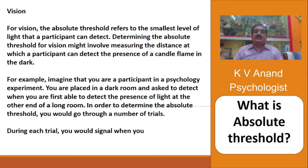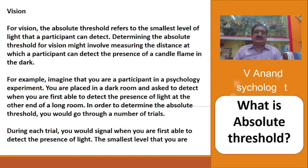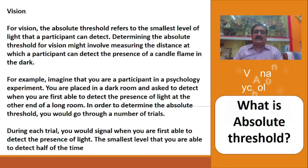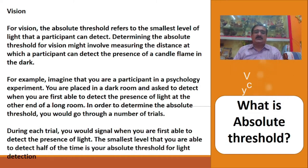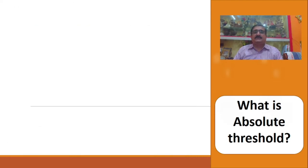In order to determine the absolute threshold, you would go through a number of trials. During each trial, you would signal when you are first able to detect the presence of light. The smallest level that you are able to detect half of the time is your absolute threshold for light detection.